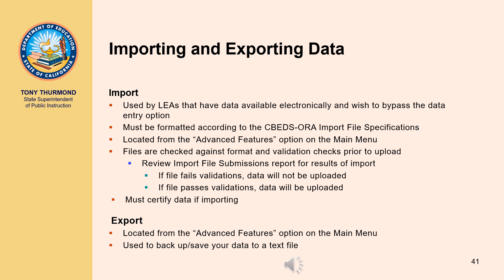This report is displayed after attempting to import your file and is available from the Reports menu. If your file fails, it will not be uploaded. You will need to review the format check report, fix the identified errors, and re-import the file. If your file passes, it will be uploaded and data will be viewable through the edit screens and reports. If importing data, you must still go through the process of certifying your data. In order to obtain a file of data in CBEDS Aura, users have the option to export a data file. The export option is located in the Advanced Features option from the main menu and may be used to backup or save your data to a text file.